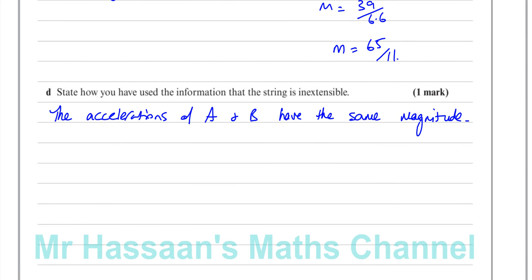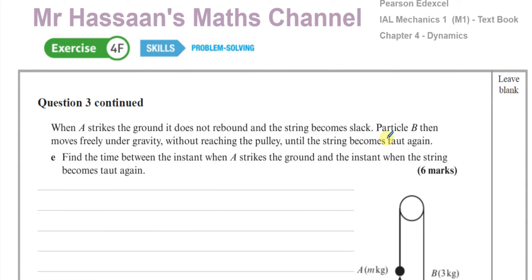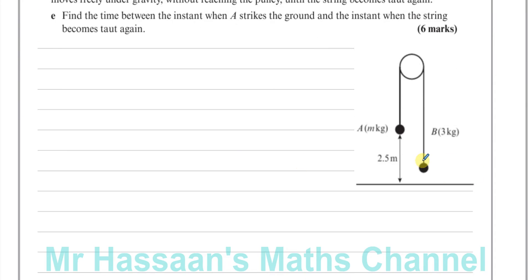For part E: when A strikes the ground, it does not rebound and the string becomes slack. Particle B then moves freely under gravity without reaching the pulley. When B has risen 2.5 metres that's when A hits the ground. After that, B continues upward decelerating under gravity alone until it reaches instantaneous rest, then falls back down. When it returns to the same level — 2.5 metres above the ground — the string becomes taut again.